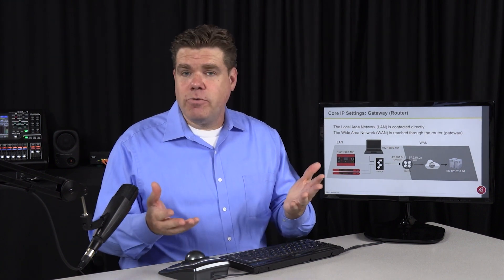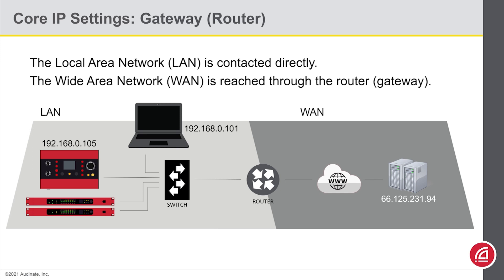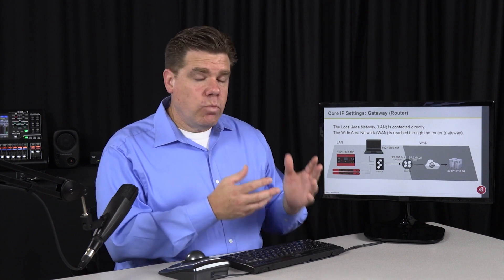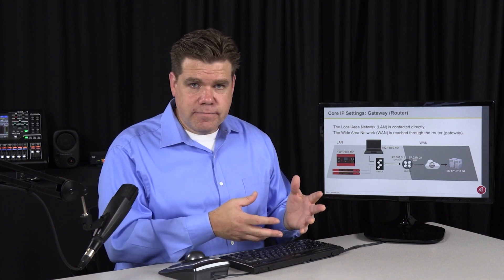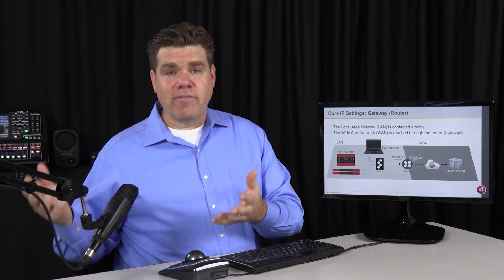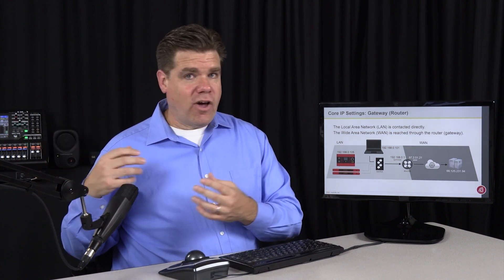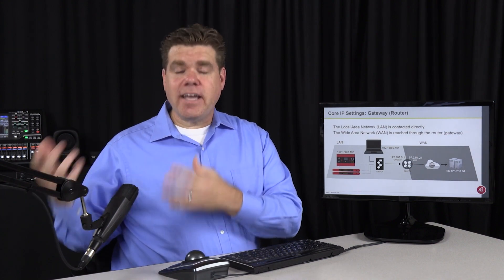When we called the operator, we knew the operator's phone number — zero. Zero was the operator's phone number. In your network settings, the gateway is the IP address of the router on your local area network. The router will also have a connection on the wide area network side, linking the two networks together, with each port having its own IP address. So if we want to make a connection on the local area network, we can make that connection ourselves. However, if we want to contact a device outside our local area network — perhaps on the wide area network — we contact the gateway, the router, which will then open up a second connection to complete the next leg of our journey.